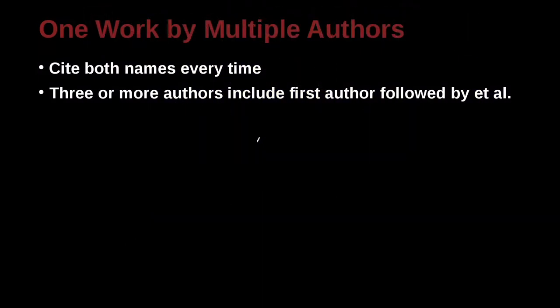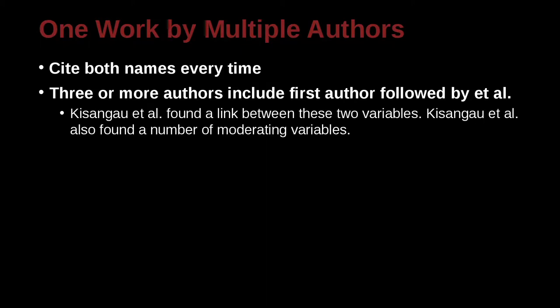What if we have multiple authors? In that case, you want to list each author's name, but if you have three or more authors, then you can use 'et al.' This sounds familiar, doesn't it? Because in APA, we do something similar to that.